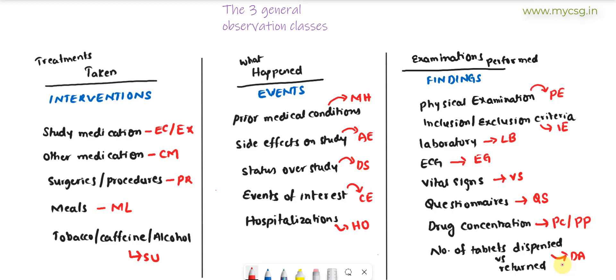Apart from the three general observation classes, we have something called special purpose domains — data that does not fall under those three classes. The four commonly seen special purpose domains are demographics, subject visit status, subject element status, and comments. There are some newly added special purpose domains in newer implementation guides, but these four are the key ones to remember.